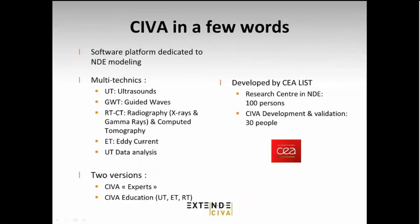SIVA is a modeling software dedicated specifically to NDT modeling — not a general purpose tool but truly NDT-oriented. It covers different inspection methods: UT, guided wave, RT and CT, and eddy current. It also includes data analysis tools for UT, helping you load real data and do analysis work in the software. There are two main versions: SIVA Expert and SIVA Professional, and a simplified version for education. The tool is developed by CEA, a research center in France, with a development team of about 30 people.